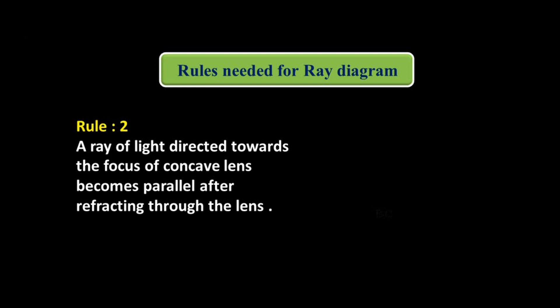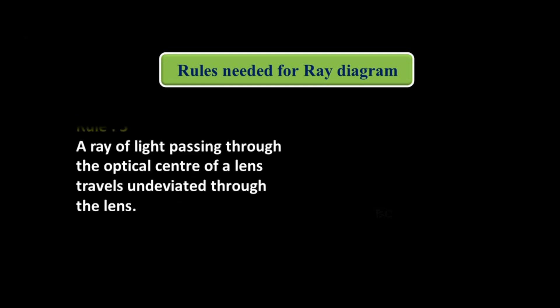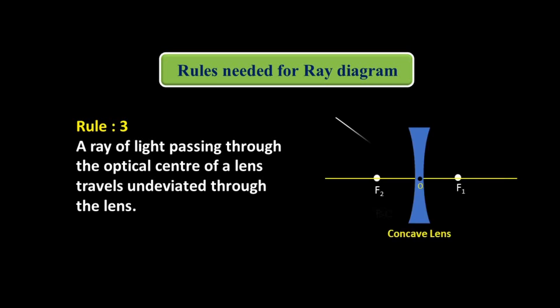Rule number 2: A ray of light directed towards the focus of Concave Lens becomes parallel after refracting through the Lens. A ray of light whose direction is towards the focus, after refraction, becomes parallel to the Principal Axis. Rule number 3: A ray of light passing through the optical center of a lens travels undeviated through the lens — it passes through the optical center without any deviation.